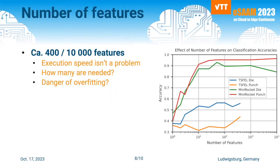When you hear 10,000 features extracted, you are immediately thinking about overfitting — and that is what we were thinking. We made trials selecting features from the MiniRocket library, and we got almost as good results as with the full set with only 10 features. That seems much more reasonable. There is no difference in execution speed, but anyway we are happy to be in lesser danger of overfitting.